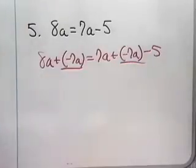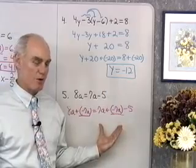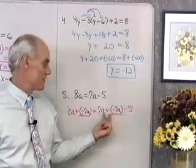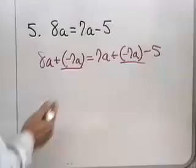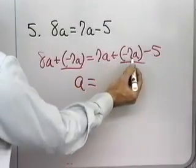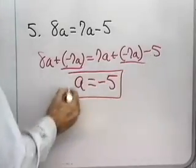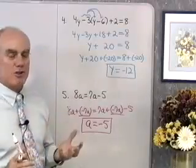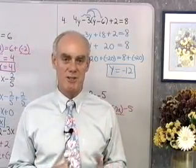So as long as we add the same amount to both sides of the equation, we know we won't change the solution to that equation. So I chose to add negative 7a to both sides because I want to get rid of the 7a on this side. 8a plus negative 7a is just a. 7a plus negative 7a is 0, plus negative 5 is negative 5. So you want to become very proficient at using that addition property of equality to solve these simple equations.